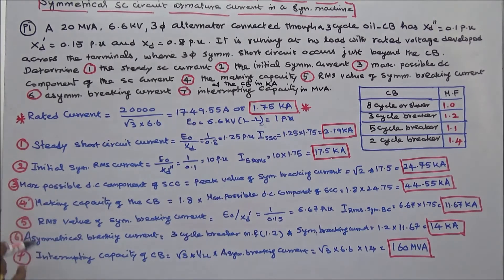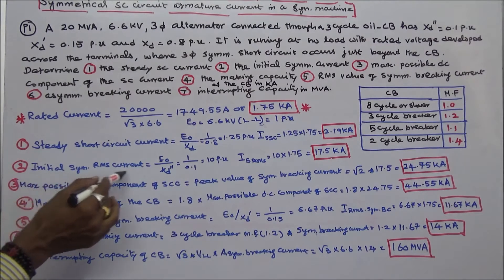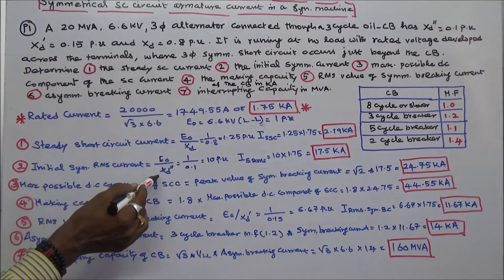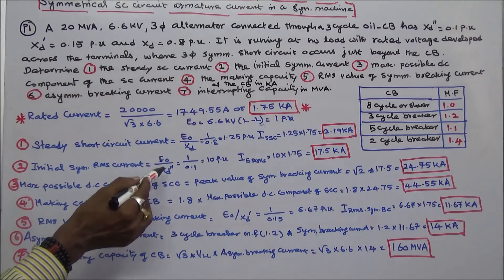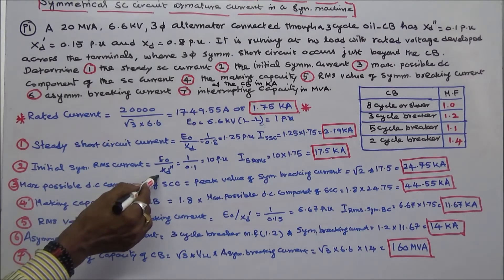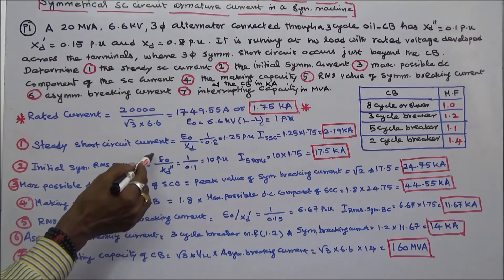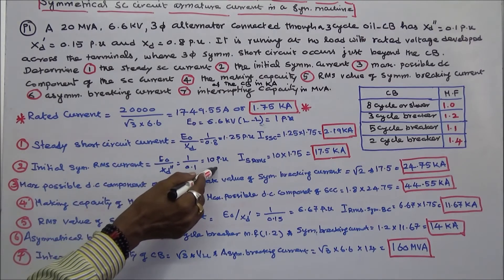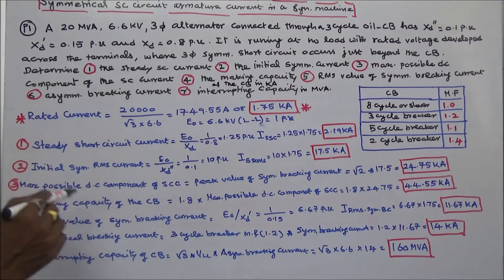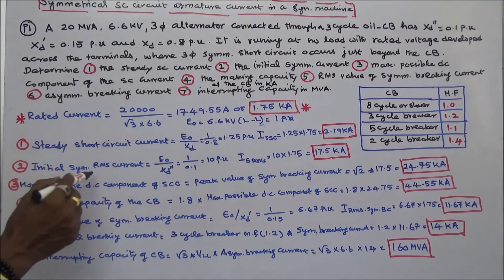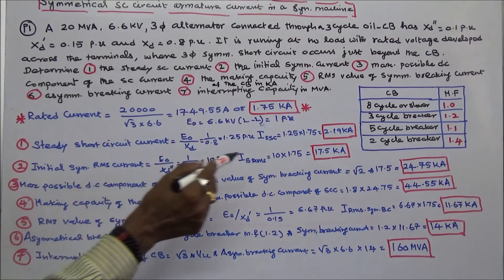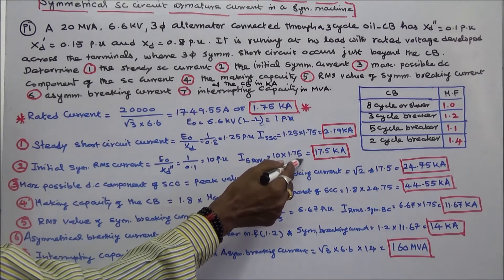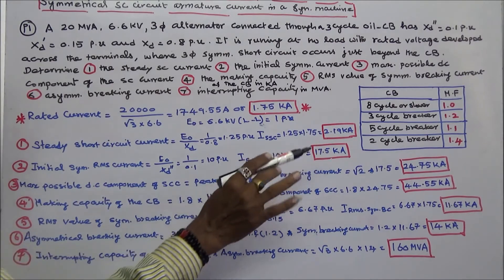Second is the initial symmetrical RMS current. That equals E0 divided by subtransient reactance. Subtransient reactance is 0.1, E0 is 1, so 1 divided by 0.1 equals 10 per unit. Actual initial symmetrical RMS current is 10 into 1.75, which equals 17.5 kA.